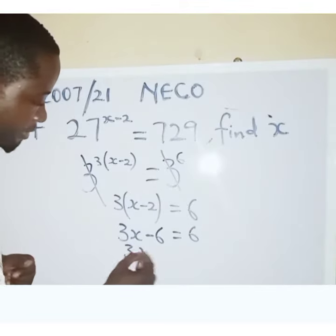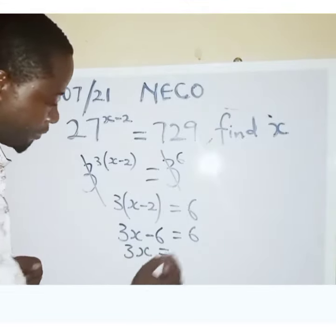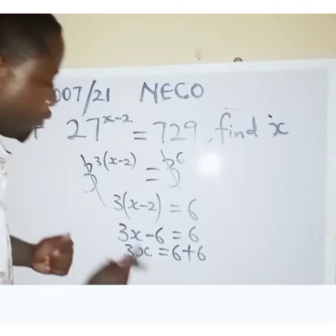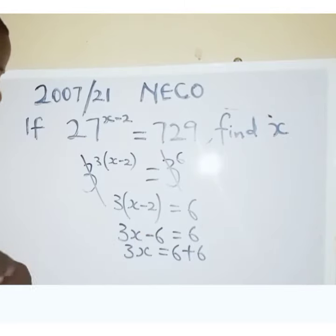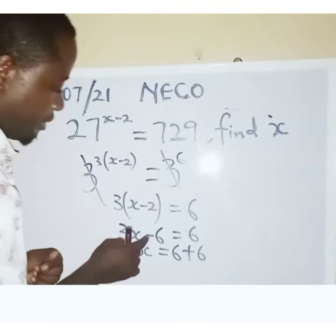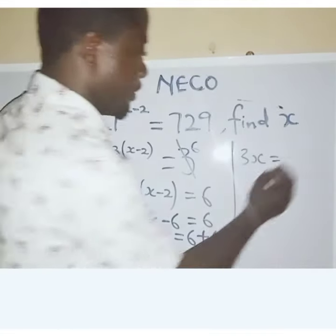And I'm going to have 3x equals 6 plus 6. When this is moved to this side, it becomes 6 plus 6. Because it equals 6 plus 6.